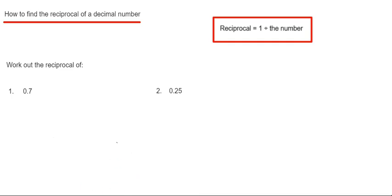Hi guys, welcome back. This is Maths3000. I'm going to show you how to work out the reciprocal of a decimal number. To do this you just need to do 1 divided by the decimal. Let's have a look at a couple of examples then.